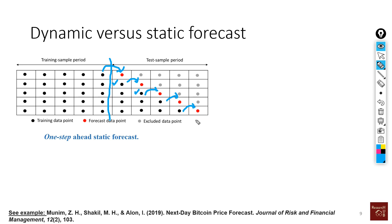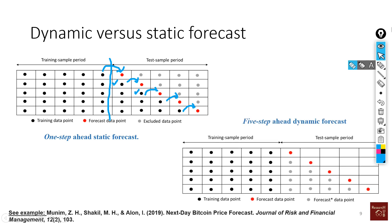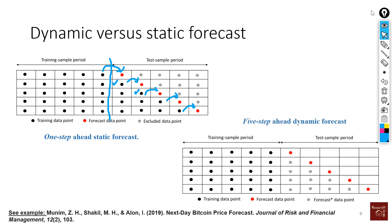That's the static forecast approach. In practice, that's how business works. For example, if I'm forecasting Bitcoin price today, I use all the data I have until today and forecast tomorrow. When tomorrow arrives and I have that data, I use all data up to tomorrow to forecast the day after. But if I want to forecast Bitcoin price for the next whole week, that's when we need dynamic forecast models.